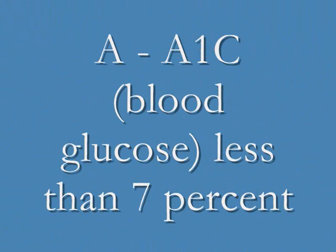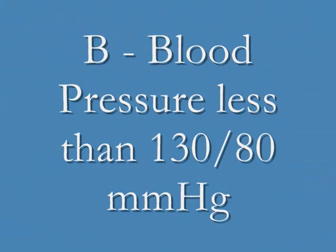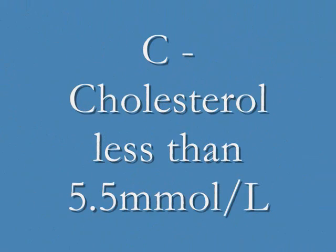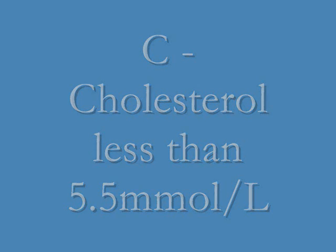The treatment goals for people with diabetes are summarized as ABC: A1C is an averaged blood glucose level, B for blood pressure should be less than 130 over 80, and C for cholesterol should be less than 5.5.